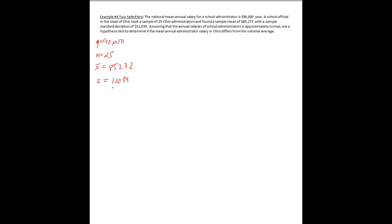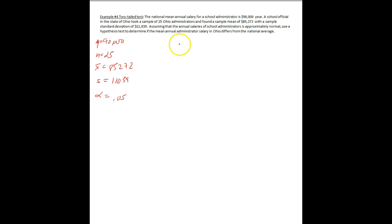Use a hypothesis test to determine if the salary differs — but it doesn't give us an alpha level, so let's just go with 0.05. You could also pick 0.01 if you want, but if you want to follow along, use 0.05.